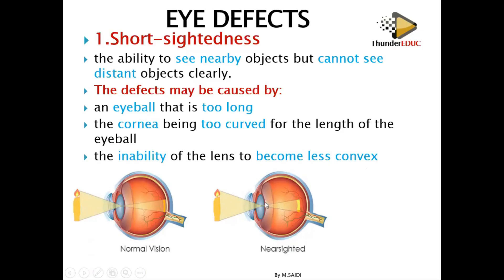Because the eyeball is too long, the image does not form on the retina — it can't travel the full distance of the eye, so it forms in between. The focal length of the lens means the image falls before the retina.